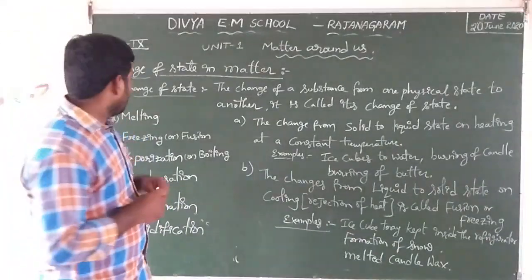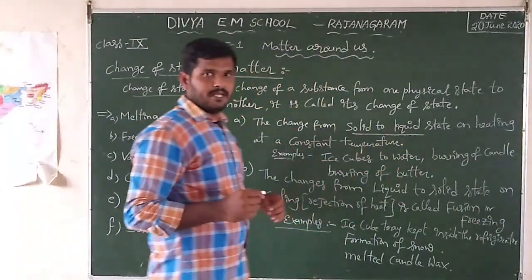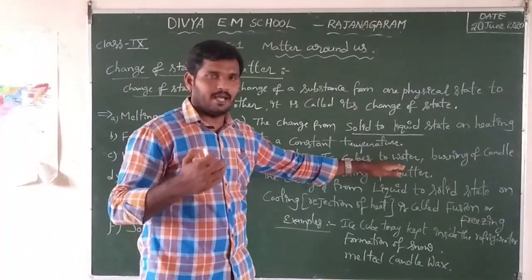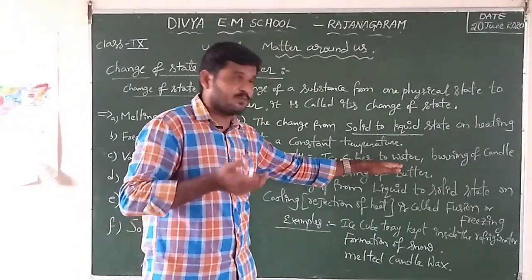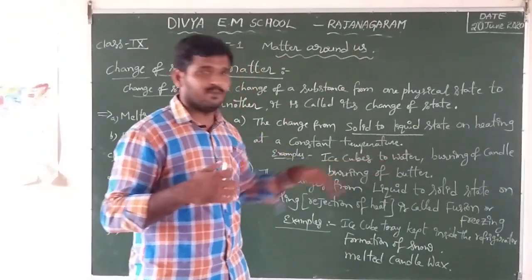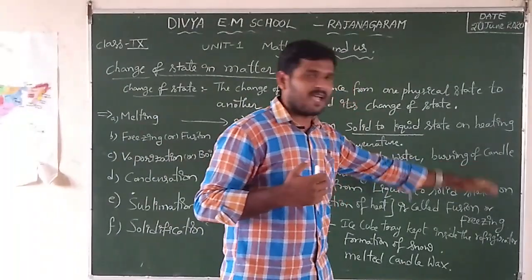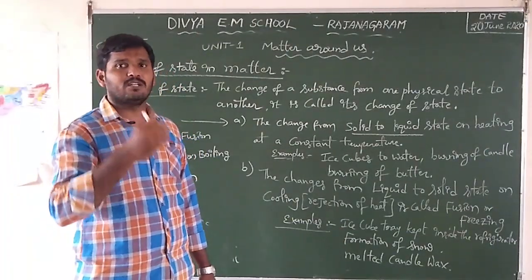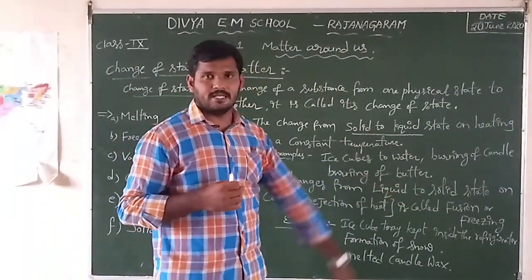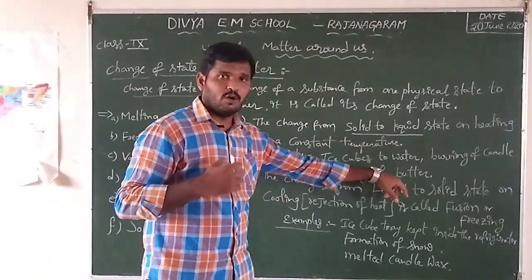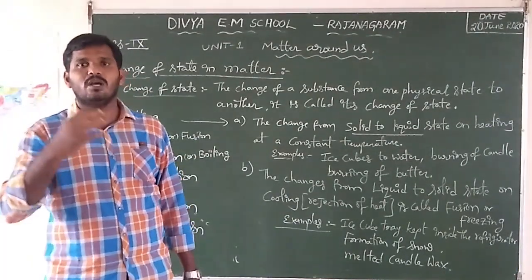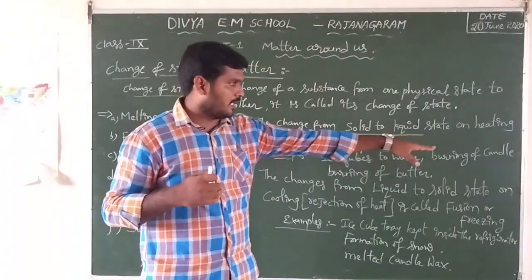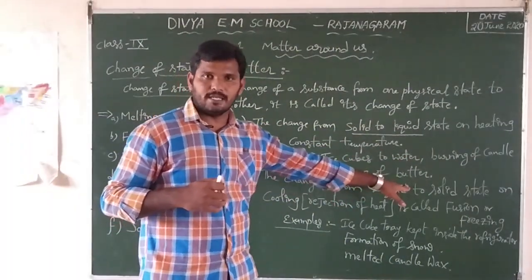In melting, solid state converts into liquid state. Examples of melting: first, ice cubes to water — ice cubes convert into water when heat or temperature is applied. Second, burning of candles — the candle is a solid state, then it converts into liquid state. Third, burning of butter — we heat the butter and it converts from solid state to liquid state. So many examples of melting; a few examples are ice cubes to water, burning of candle, and burning of butter.